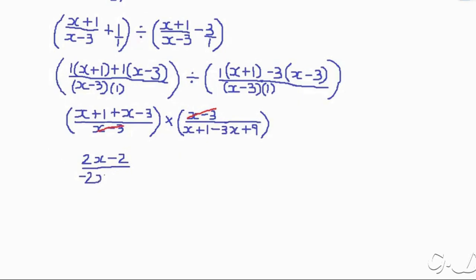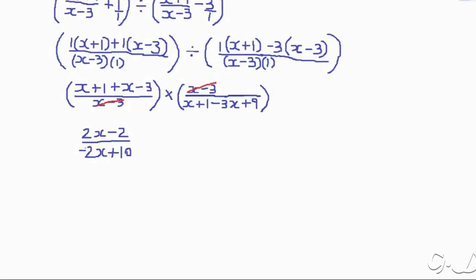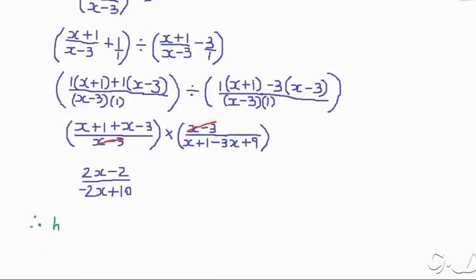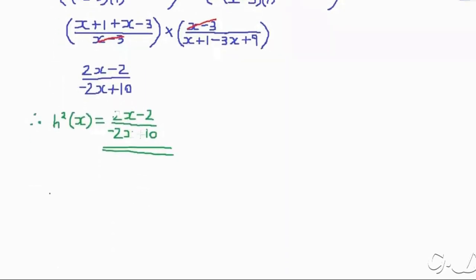On the denominator, x − 3x = −2x, and 1 + 9 = 10. Therefore, h²(x) = (2x − 2) over (−2x + 10). That is the expression required for part A.